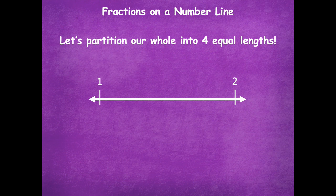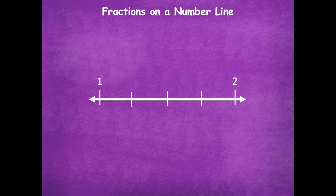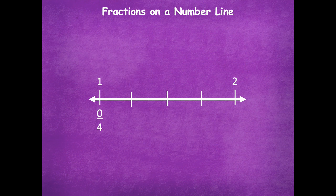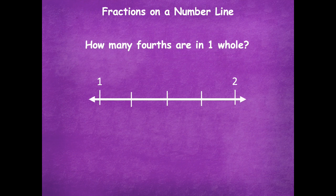So let's partition our whole into four equal lengths, or our fractional unit fourths. Remember when you're talking about a number line and you're splitting up into fourths, you would only draw three lines — you draw one less than the number of parts that you want, same thing when you're splitting up rectangles. So here now I have four equal parts. Zero fourths — wait, what's wrong with zero fourths? Why can't I label one as zero fourths? Because that's not where we're starting.